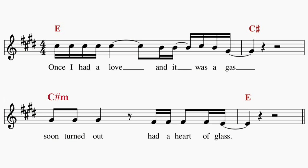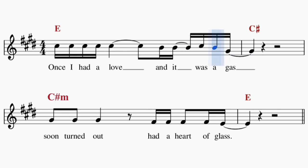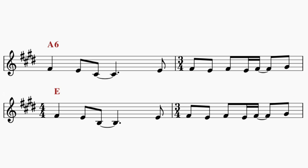The majority of 'Heart of Glass' by Blondie is in 4/4. However, when we reach the bridge, we get a subtle change — we suddenly get a one-off bar of 3/4 at the end of each phrase. This jolts the song forward and helps add something interesting and ear-catching to this instrumental bridge.